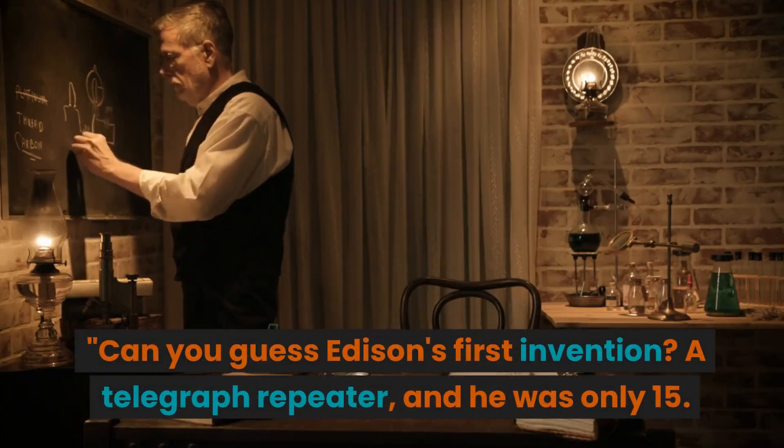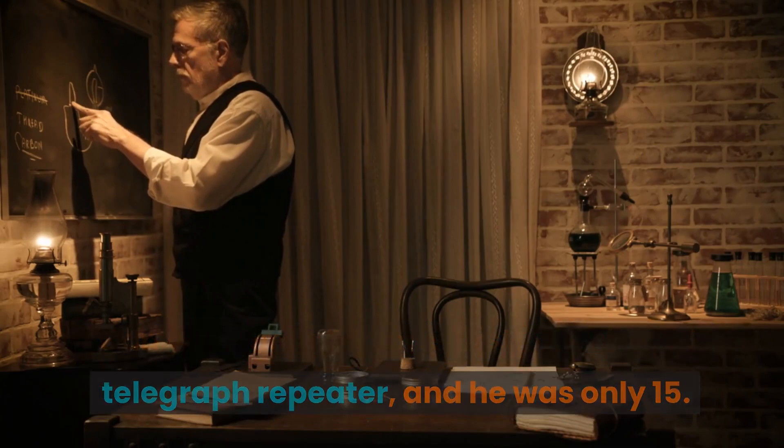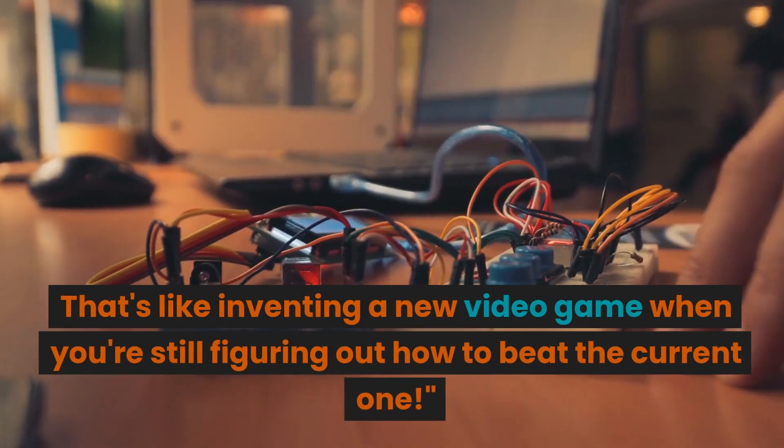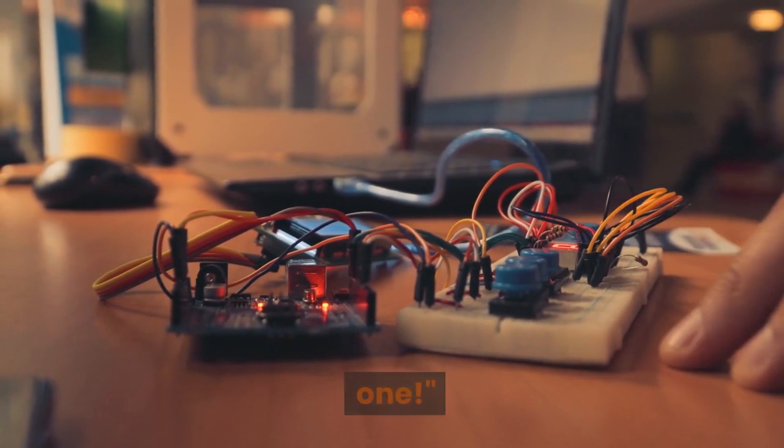Can you guess Edison's first invention? A telegraph repeater, and he was only 15. That's like inventing a new video game when you're still figuring out how to beat the current one.